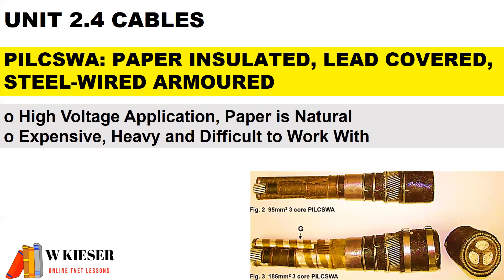A POTSWA cable, which is our paper insulated lead covered steel-wire armoured cable, has high voltage application. The advantage is that paper is a natural form of insulation. The disadvantages: it's expensive, it's heavy, and difficult to work with and to terminate.